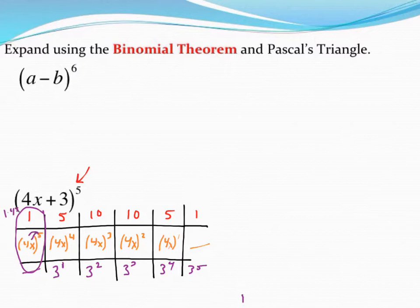So using a calculator to do 1 times 4 to the fifth, I end up with 1024x to the fifth power.